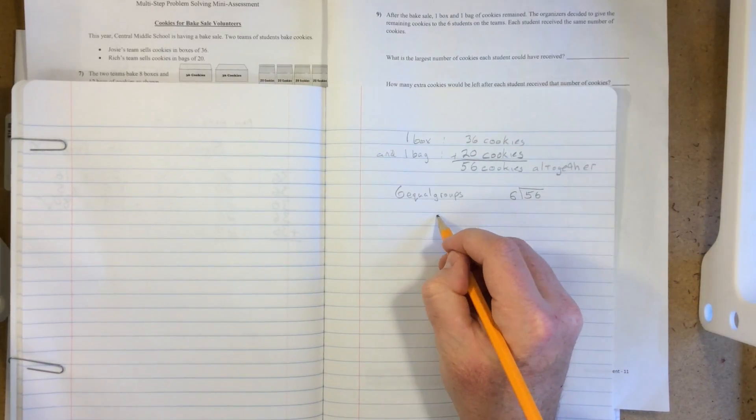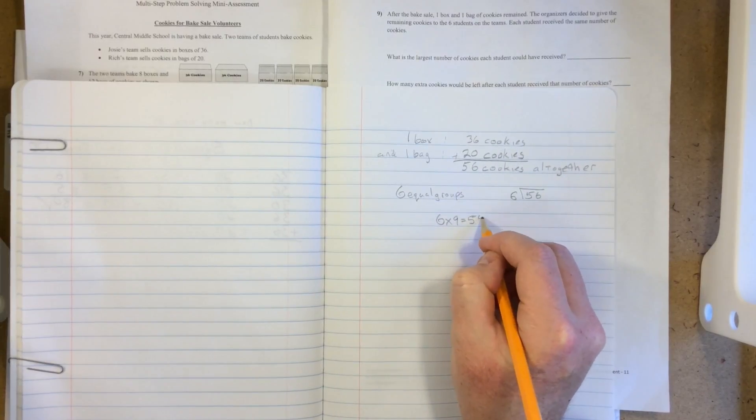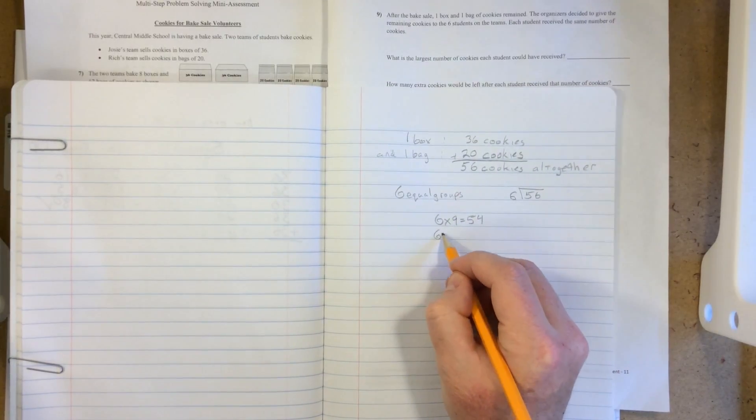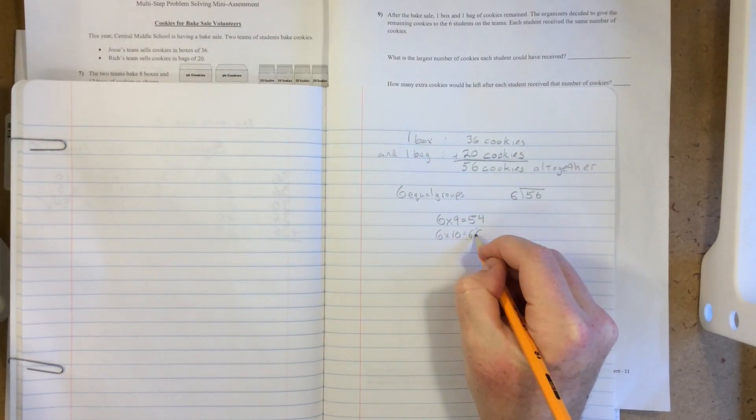We know that 9 times 6 is 54, and that's very close to 56 and less than it. If we did 6 times 10, we'd get 60, which is greater than 56, so that can't be the number.